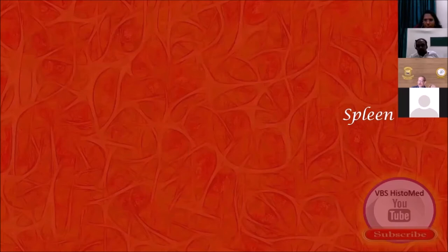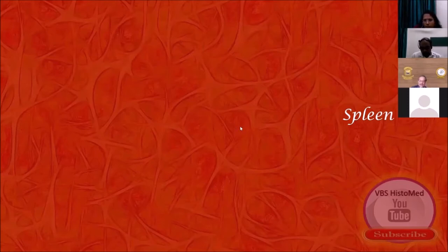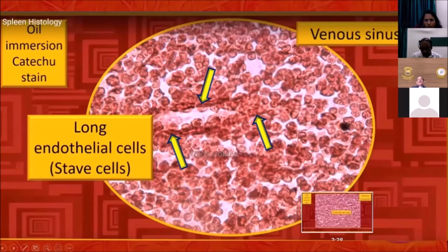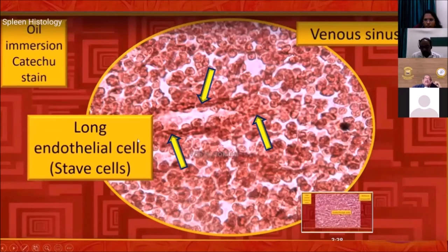Next, spleen. There are certain interesting things in the spleen routinely missed in H&E. I used a special stain and even after using it, I had to search for about two hours to get this photograph. We routinely talk about stave cells and say the ultra-microscopic view may not be routinely visible. I used — if I'm correct — a catechu stain, and with the highest possible resolution without losing clarity, I was able to identify one small area with a venous sinusoid.